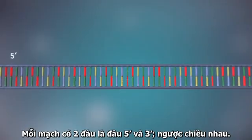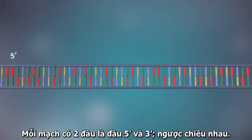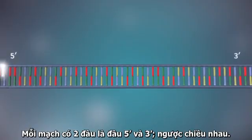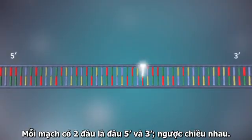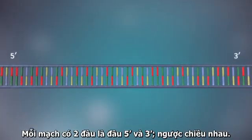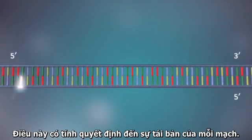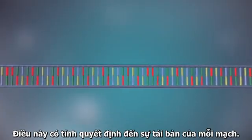Each strand has a five prime end and a three prime end. The two strands run in opposite directions. This determines how each strand of DNA is replicated.